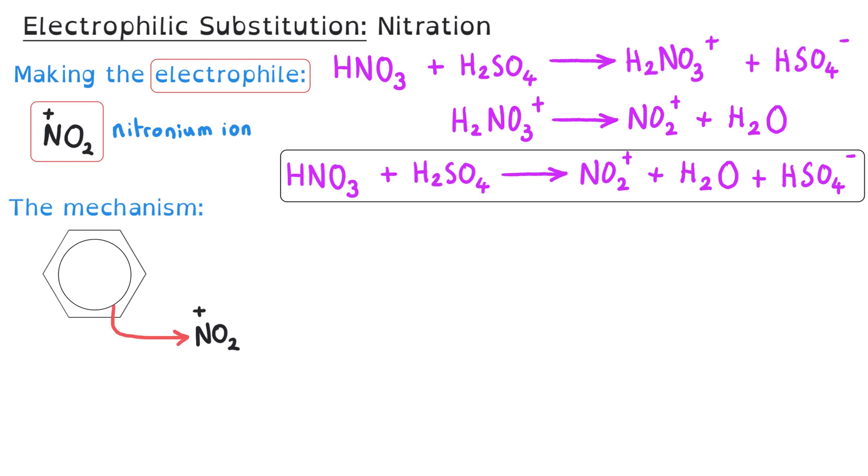The electrophile attacks the benzene ring, and we show this using the curly arrow that I'm showing now. Curly arrows always show the movement of electrons, and that's what we're showing here. But we must say that the electrophile attacks the benzene ring. The symbolism of this curly arrow is that we're showing that a new bond is forming between the carbon atom and the nitrogen atom from the electrophile. This moves on through to make an intermediate chemical.